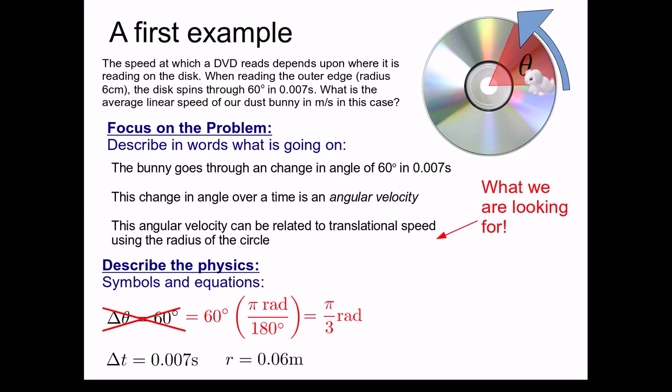So now let's go back to focusing on the problem and think about what other quantities or equations might be helpful. We see that the change in angle over time is an angular velocity. We're interested in average quantities here, as it says in the problem. So we're probably interested in omega bar equals delta theta over delta t. However, looking at our focus on the problem, we also see that we're interested in the translational speed, which we know can be related to the angular speed using the radius of the circle, or in equation form, v bar equals r omega bar.